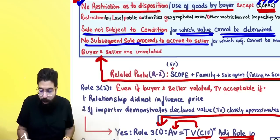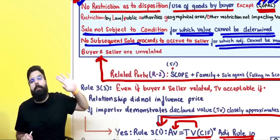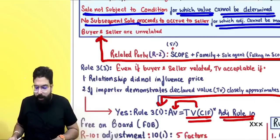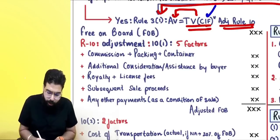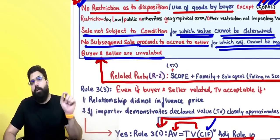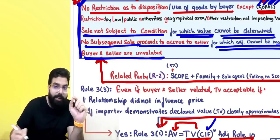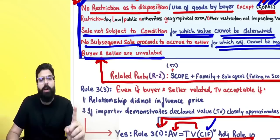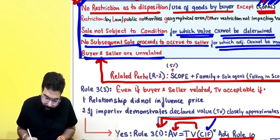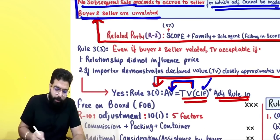The third condition: no subsequent sale proceeds should be payable by you to the seller that you cannot adjust. If you cannot determine the subsequent sale proceeds, find the value by applying the valuation rule. But if you can determine how much the subsequent sale proceed will be, just add it to your transaction value. The fourth condition is: the buyer and seller should be unrelated. If all four conditions are satisfied, your transaction value becomes the acceptable value.